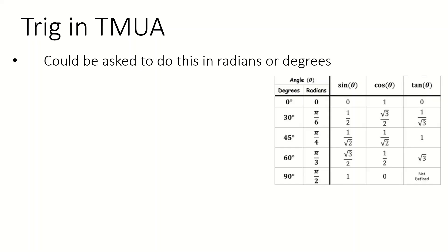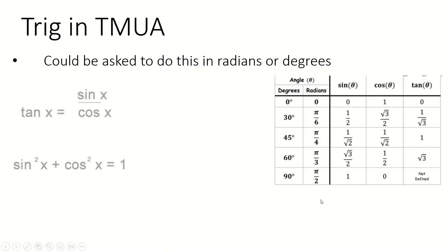The questions seem fairly random — they seem to just flip a coin every time it comes up to decide whether they want to write the question in degrees or radians. So you need to be aware of both, know that this value is this one and this one is this one, and have the same system for finding further values. These are the only two identities in this spec: tan is sine over cos, and sine squared plus cos squared equals one.